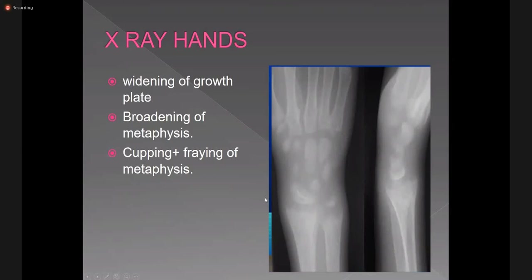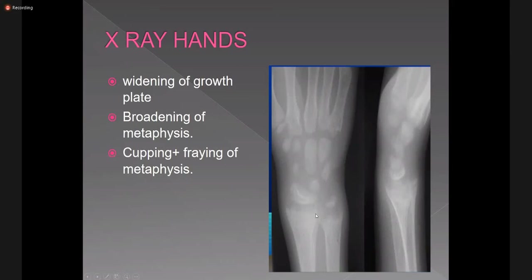Coming to the X-ray of a ricketic child: here you can see the epiphysis of the radius and diaphysis, and the epiphysis of the ulna. The area that appeared lucent on X-rays shows broadening of the growth plate. There is broadening of the metaphysis — the metaphysis has become concave, and this is called cupping.